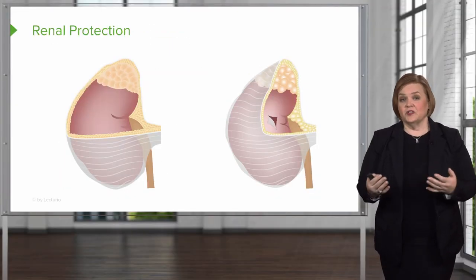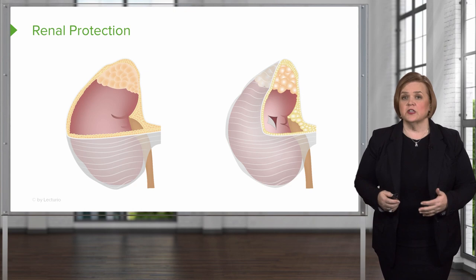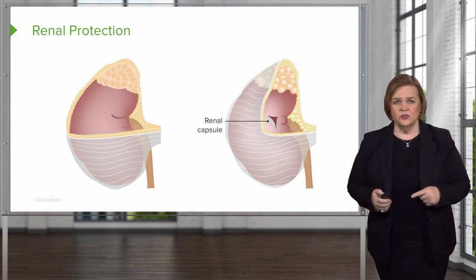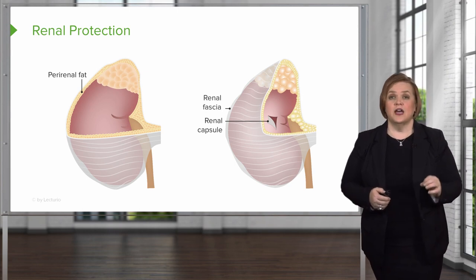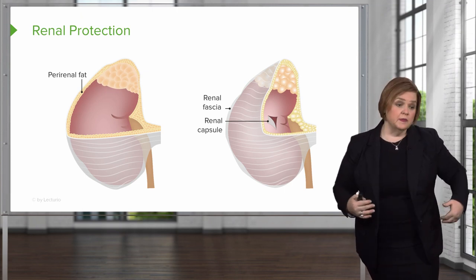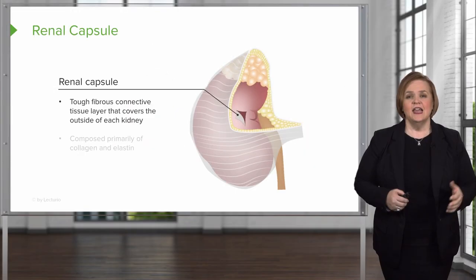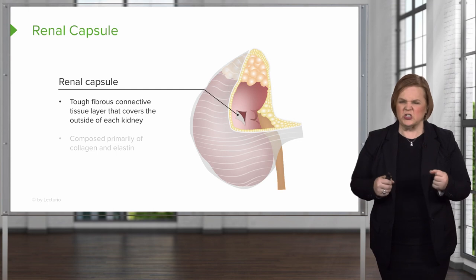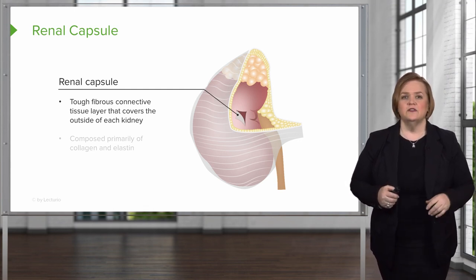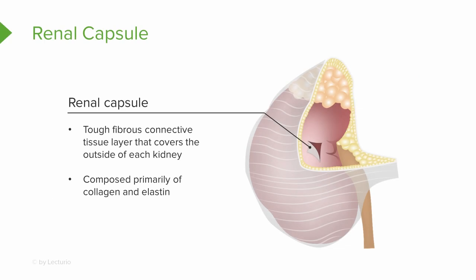Nobody likes an extra layer of fat, but we actually need it to protect the kidneys. Three things help protect the kidneys: the capsule, the perirenal fat, and the renal fascia. These structures are meant to cushion and protect our kidneys from damage, trauma, and absorbing shock. Now the renal capsule is a tough fibrous connective tissue layer that covers the outside of each kidney. It's tough and fibrous because it's made of collagen and elastin — it's essentially a protective sack or case around your kidneys.